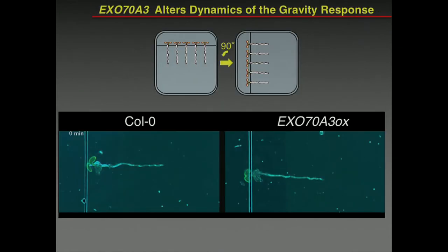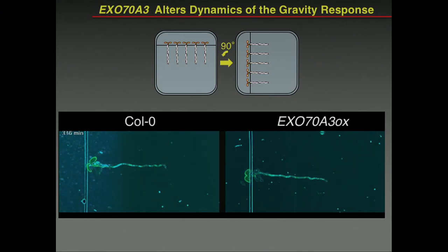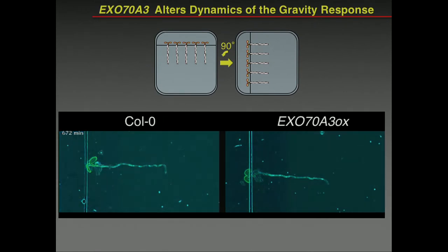In a real plant challenged by changing the gravity vector, there's a big difference between plants with a nonfunctional version of this gene. In the wild type where the gene is functional, the root turns down very nicely. In the line where we overexpressed Exocyst70A3, this response is much slower. This gene is involved in the correct timing of eliciting a growth response when the root is not growing straight down anymore.